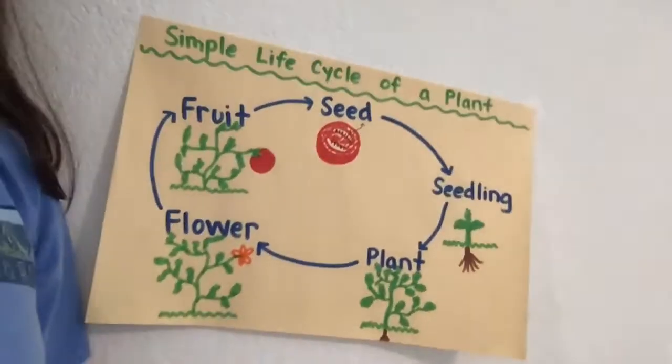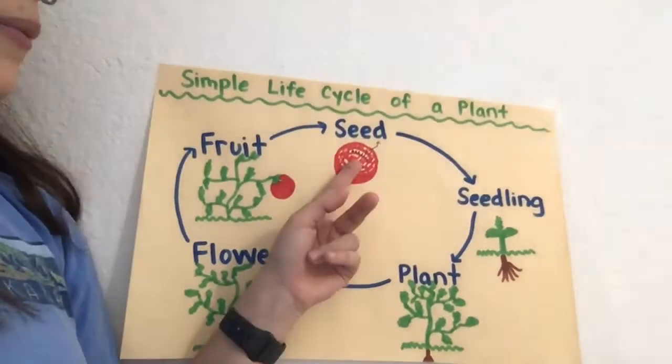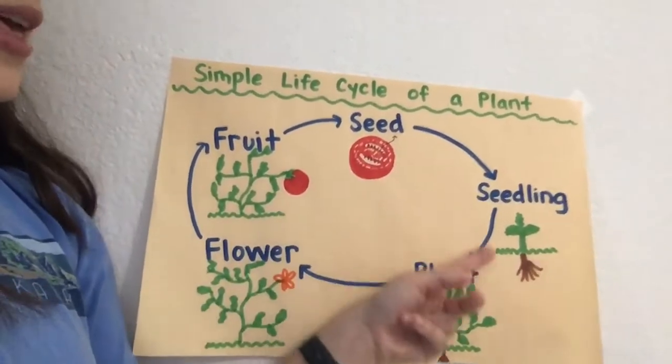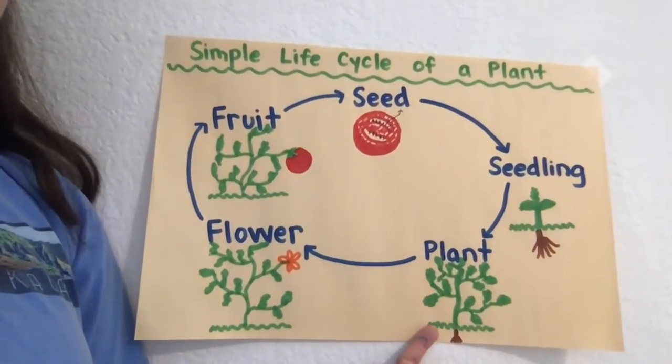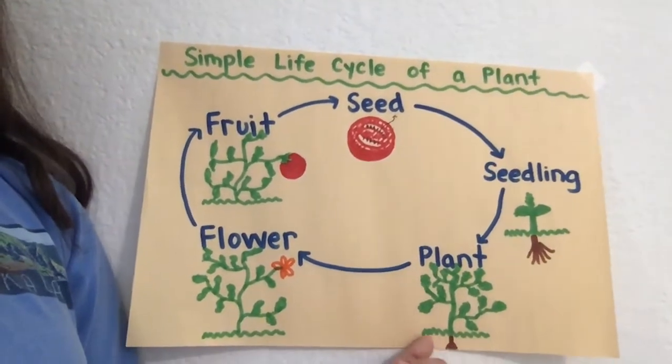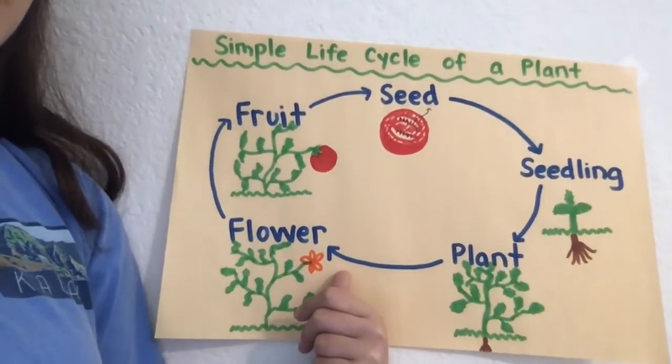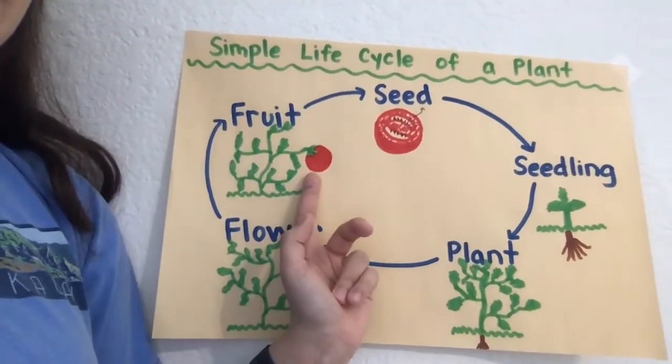We're going to talk about how many plants go through a life cycle from a seed to a seedling, and then to an adult plant that produces fruit or flowers. I made an anchor chart of the five steps of a simple life cycle of a plant. I did a tomato seed: you get the seed from the tomato, it becomes a seedling, then an adult plant, then it blooms a flower, and then the flower eventually turns into a tomato again.